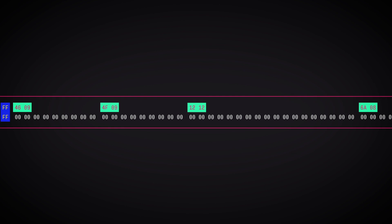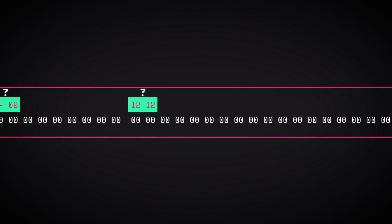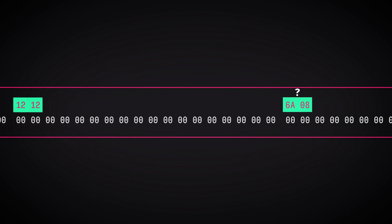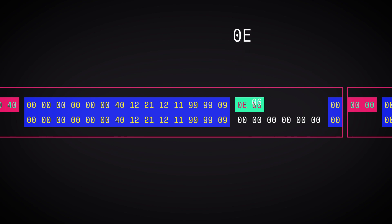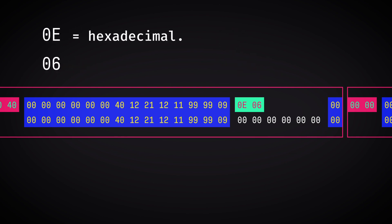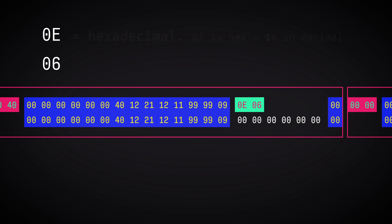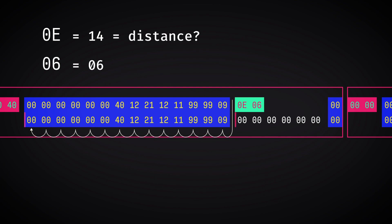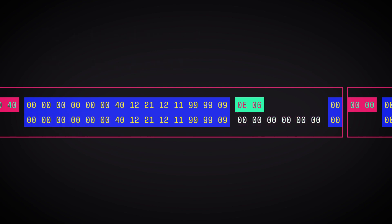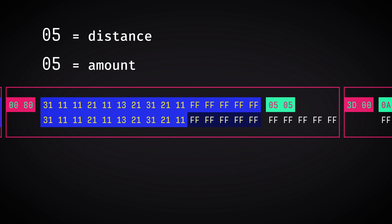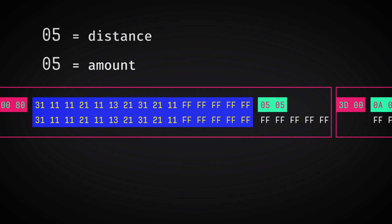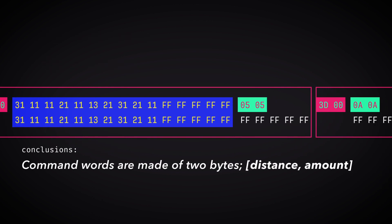But what about those command words? Recall the Dr. Seuss poem and the idea about elimination of repetition by fetching things already said in the past. Take the first command word, 0E 06. 0E is a hexadecimal number and translates to 14 in decimal. Maybe this 14 is the distance number, and 06 is the amount number. Just to be sure, look at the second command word, 05 05 — unsurprisingly, this command fetches 5 FFs from 5 bytes ago. It can be reasonably supposed that command words are made of two bytes: distance first, then amount.